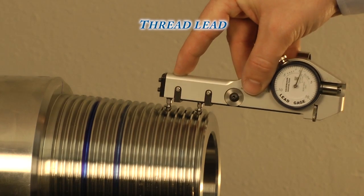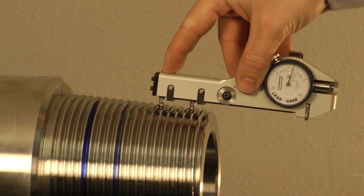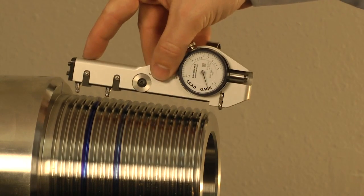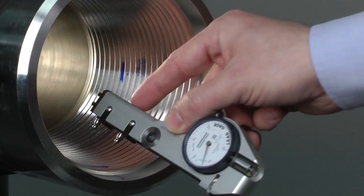Thread lead is one of the most, if not the most, important thread elements. An API required inspection that has a direct impact on diameter and connection makeup. Lead error is most commonly generated by manual and CNC lathes not cutting properly.